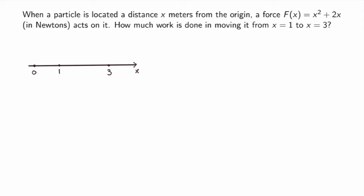The idea will be to slice the problem into manageable slices. Instead of moving the particle all the way from 1 to 3 at once, I'll move the particle through small steps. For each small step, I can assume that the force is constant, and then calculate the work done for each step separately. That gives a good approximation, but if I send the number of steps to infinity, or the width of each step to zero, I get a precise calculation of the work.